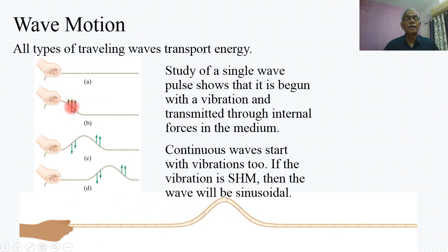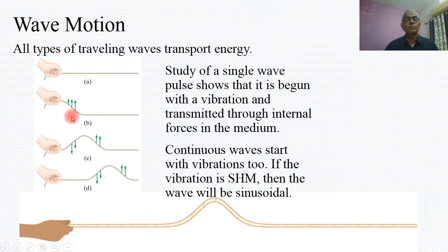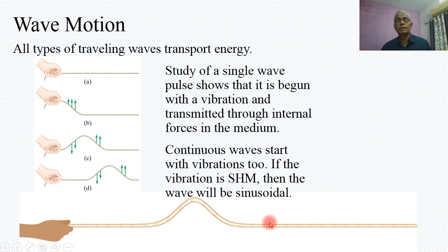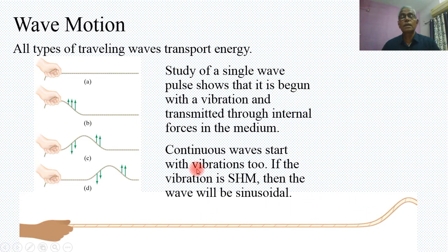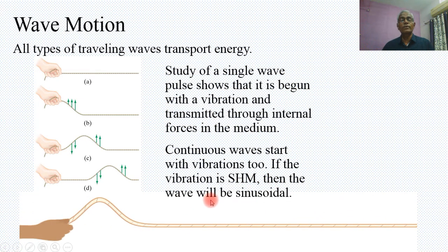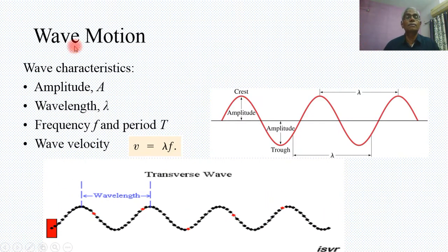When the rope is given a jerk, as you can see in the animated picture in the upward direction, the waves will be moving in the forward direction. The particles are moving in the upward and downward direction, and it goes on slowly, progressively. This is how the continuous wave starts with vibrations, and if the vibrations are simple harmonic motion, then the wave is called a sinusoidal wave.